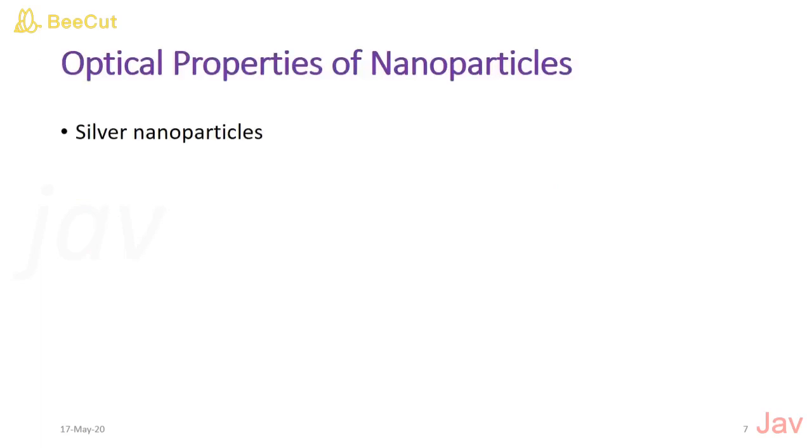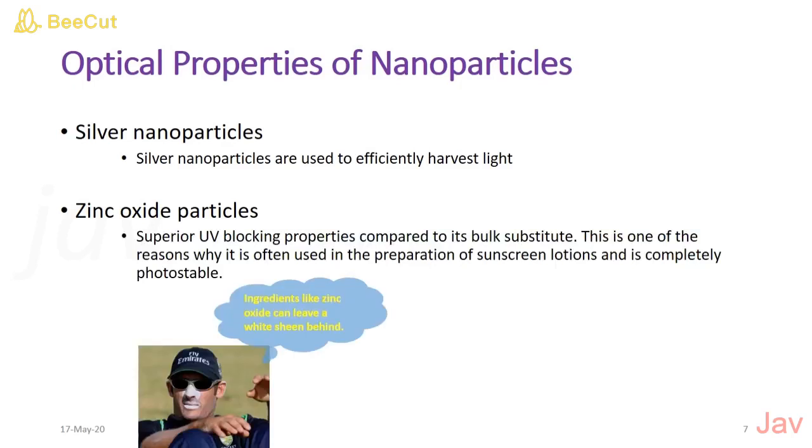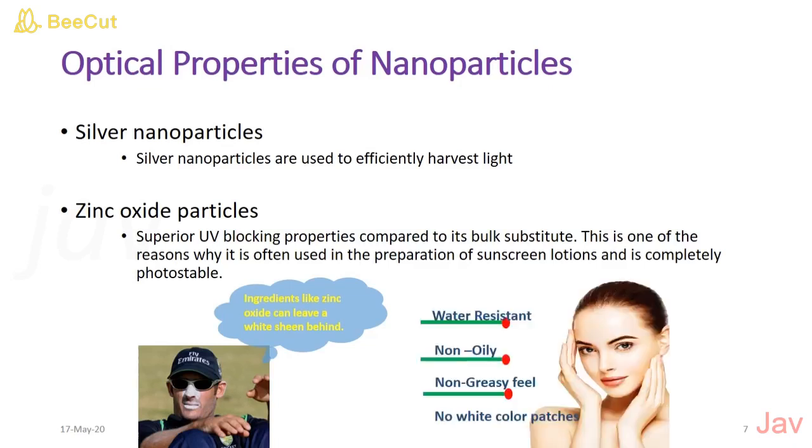Silver nanoparticles are used to effectively harvest light. Zinc oxide nanoparticles have excellent UV blocking property than the bulk. This is one of the reason why it is used for preparation of sunscreen lotion and it is completely photostable. If you are using nano cream containing zinc oxide nanoparticle, it is water resistant, non-oily, non-greasy and no white color patches.